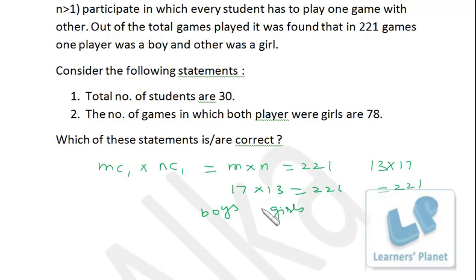So if 17 boys are there, 13 girls are there, that means in all there are 30 students. So this statement is correct.